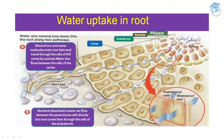Mineral ions and water molecules enter the root and travel through the cells of the cortex by osmosis. From the root, mineral ions and water enter and reach the cortex, then the endodermis, pericycle, and finally to the vascular system — that is the xylem. Water also flows between the cells of the cortex, and nutrients dissolved in water can flow between parenchyma cells directly into the root cortex and then through the cells of the endodermis.